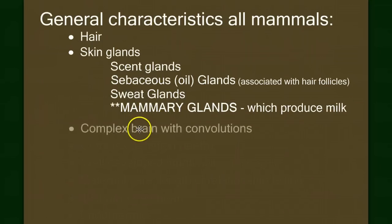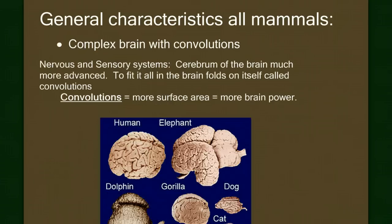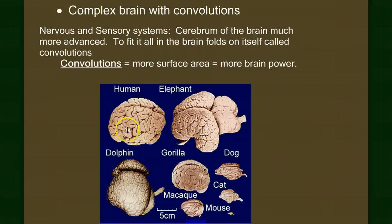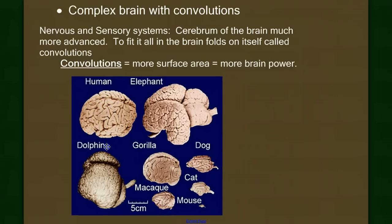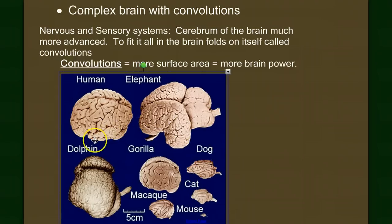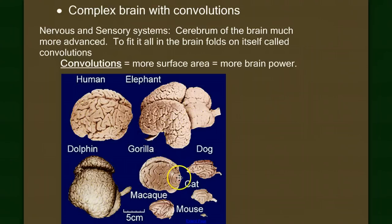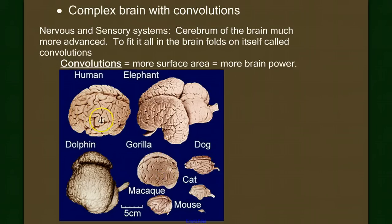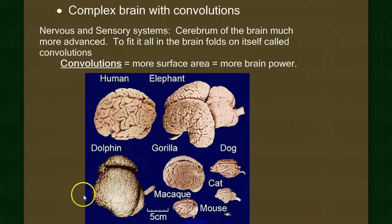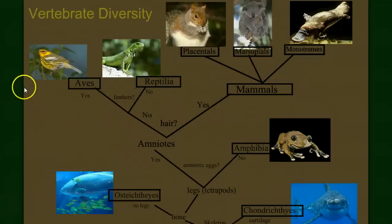The next characteristic seen in all mammals is a complex brain with convolutions. Convolutions are folds — you see all these folds that kind of look like spaghetti. When you look at the brain of a fish, reptile, amphibian, or even a bird, the cerebrum is actually smooth. In the evolution of mammals, the cerebrum grew faster than the brain case, so the brain had to fold in on itself. Overall, mammals have the larger brains and better sensory and nervous systems among vertebrates.